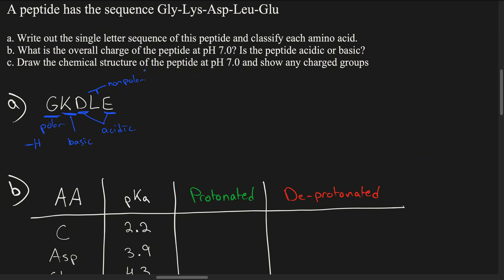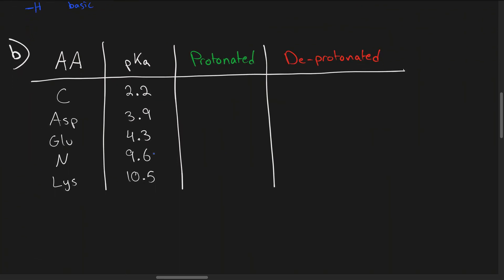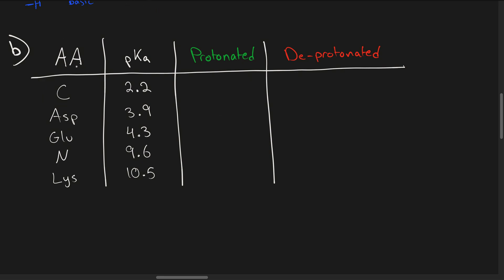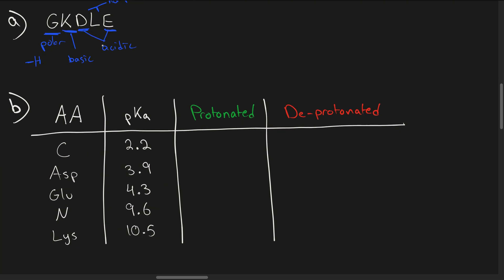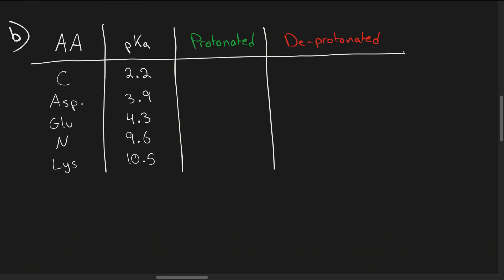Now we want to figure out the overall charge of the peptide at pH 7. I suggest making a chart that organizes the amino acids and groups on the protein. C stands for the C-terminus, which has a carboxyl group; N stands for the N-terminus, the head of the protein. We list the amino acids that have an R group with a pKa — that means we leave out glycine and leucine, since their R groups cannot donate or accept a proton. Aspartic acid, glutamic acid, and lysine do have a pKa. I've organized the pKa values from lowest to highest.